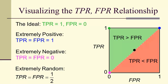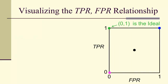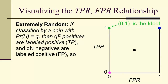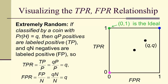We'd really like to be in the green region where the true positive rate exceeds the false positive rate. The ideal point is (0, 1). For a biased random classifier with probability Q of heads, QP positives would be labeled positive and QN negatives would also be labeled positive, so both the true positive rate and false positive rate equal Q. This means the dotted diagonal line — where TPR equals FPR — corresponds to a random classifier.